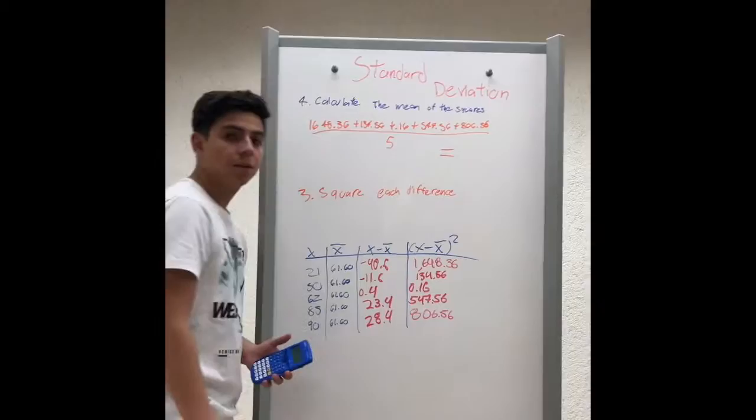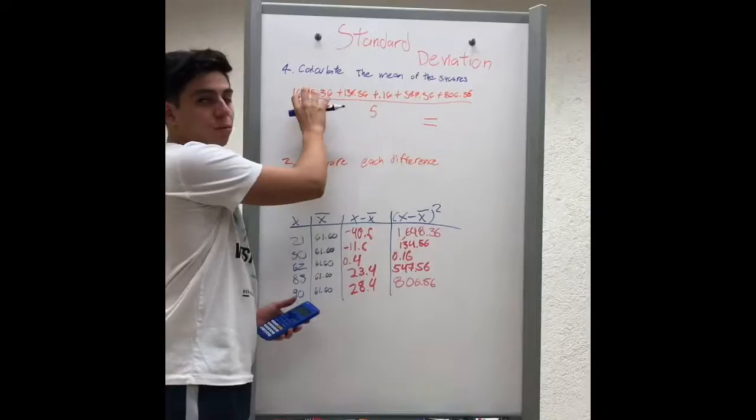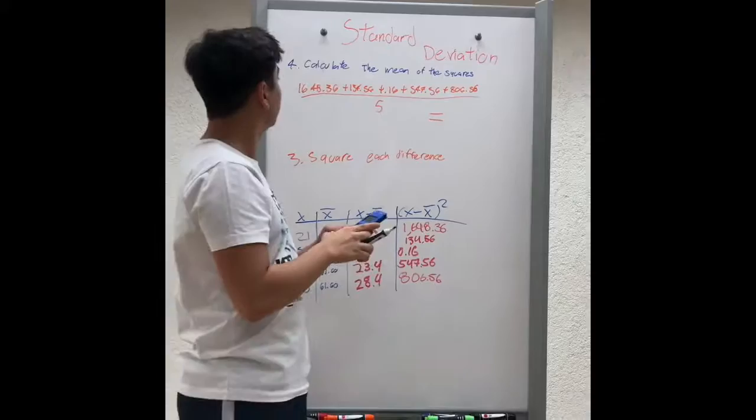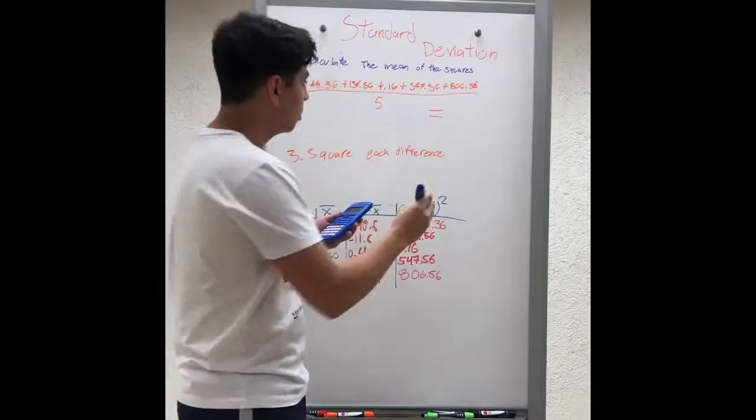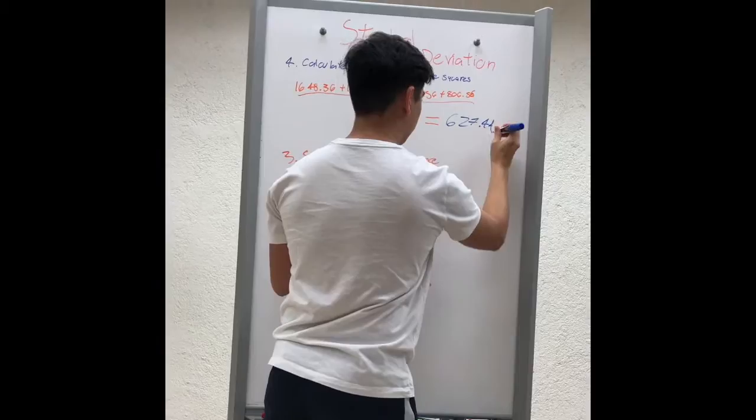Well, now we have all the squared differences. We have to calculate the mean. So, you have to write all of this and calculate it, so it will be more easy. And you will get 627.44.